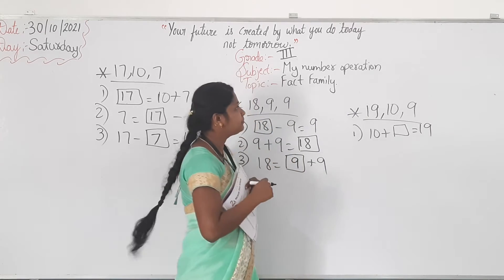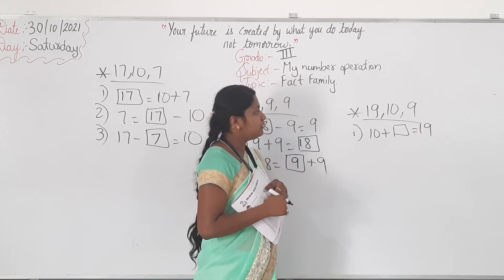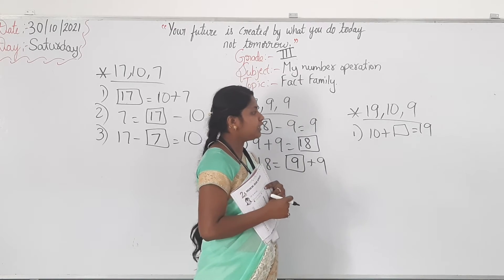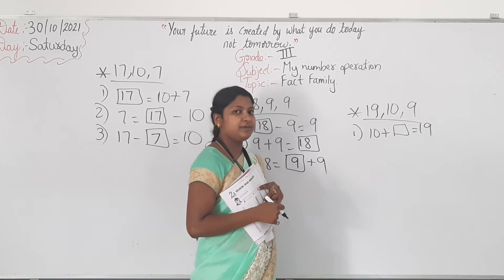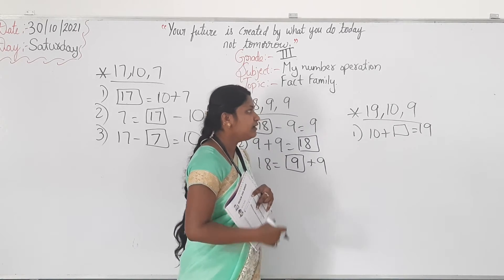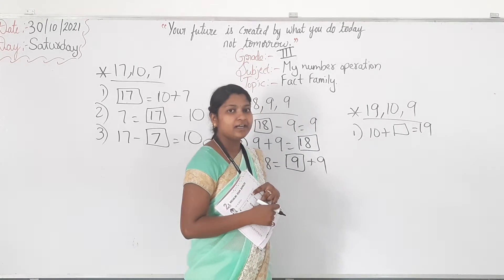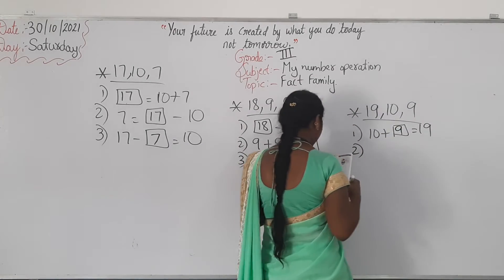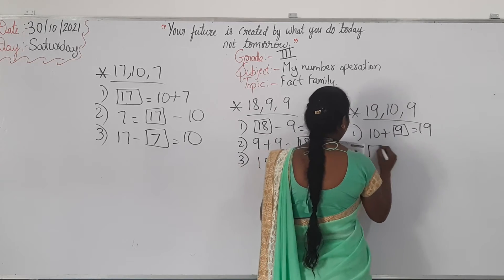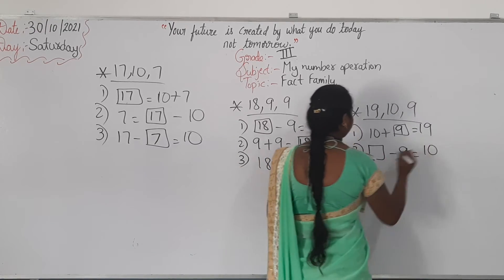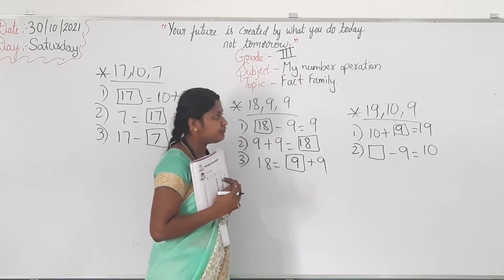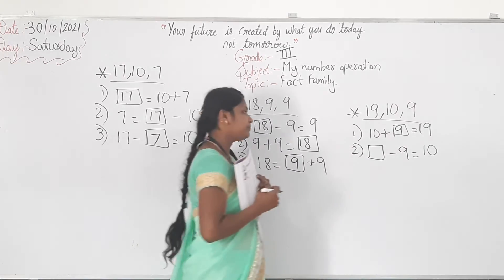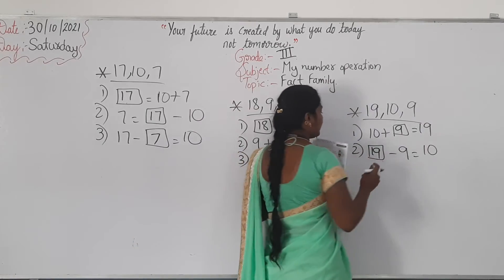So, which number will come here? If you write 19, 10 plus 19 will be 29 — so that is wrong. If you write 10, 10 plus 10 is 20 — that is also wrong. If you write 9, 10 plus 9 is 19. So, 9 is the correct answer. Then see the second one: blank box minus 9 equals 10. Which number will come here? Write 19 — 19 minus 9 will be 10. So, 19 is the correct answer.